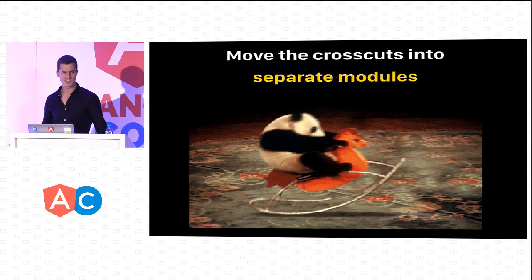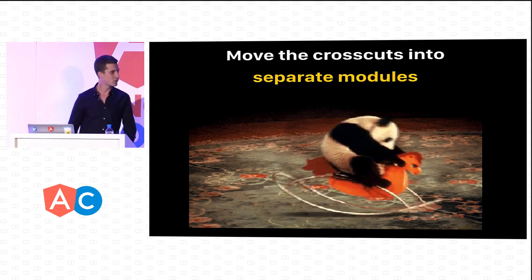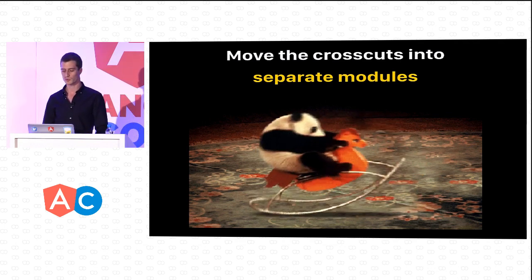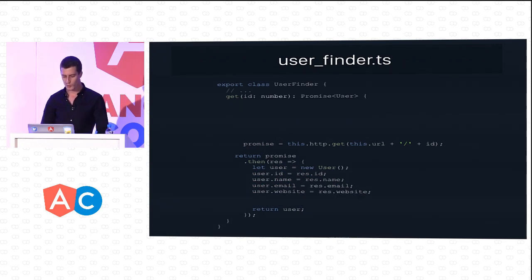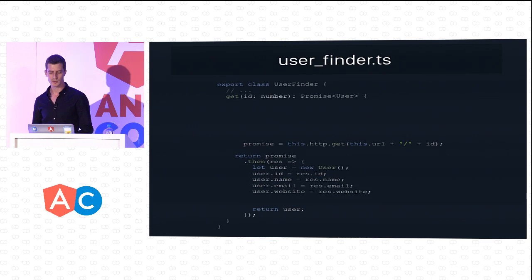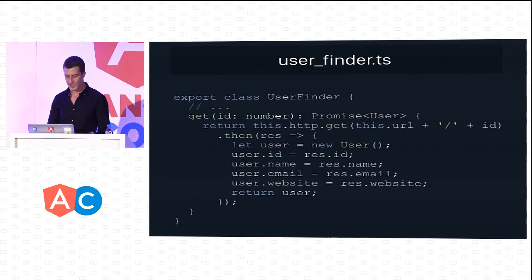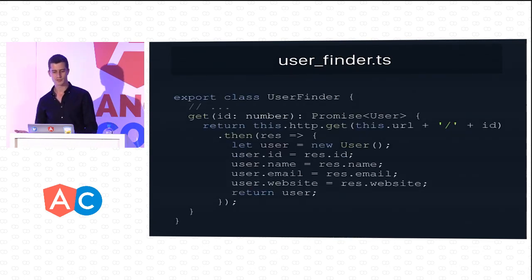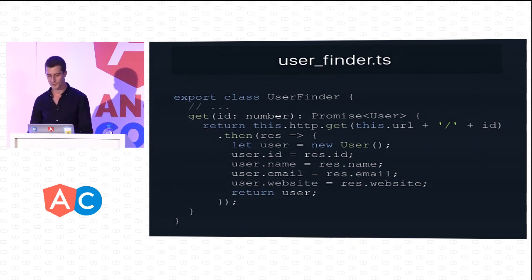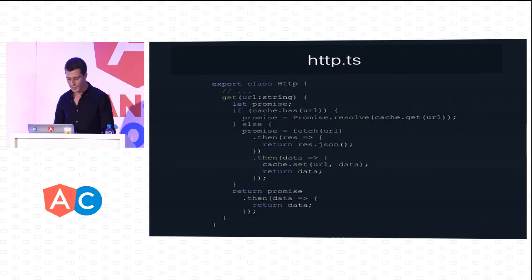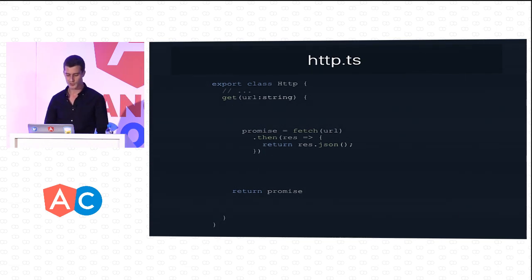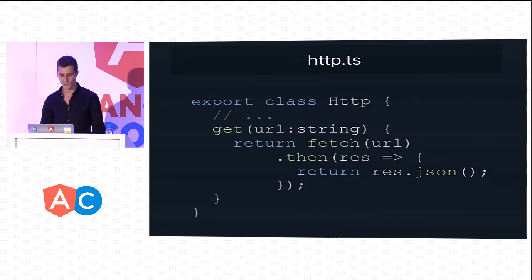What if we could just remove all cross-cutting concerns and extract them into separate modules? We can take our user finder and remove all caching-related functionality. After refactoring, we have much simpler code responsible only for making HTTP GET requests using the HTTP service and mapping responses to the user representation. The same applies to the HTTP service — we remove all caching-related code, leaving a simple method of just four lines.